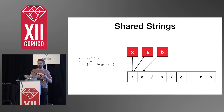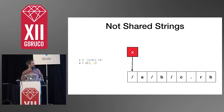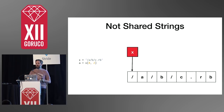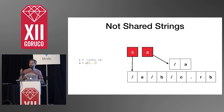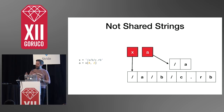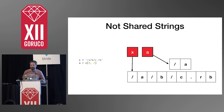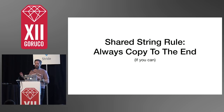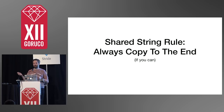This optimization works because Ruby strings are implemented using C character arrays. Unfortunately, this means we have to use the string all the way to the end to share them. We have to go all the way to the end of the string in order to share them, because C strings are ended with a null byte. The shared string rule is: always copy to the end if you can. We're going to use this optimization to reduce memory usage with the loaded features cache.